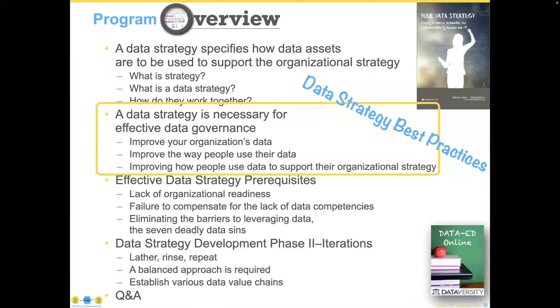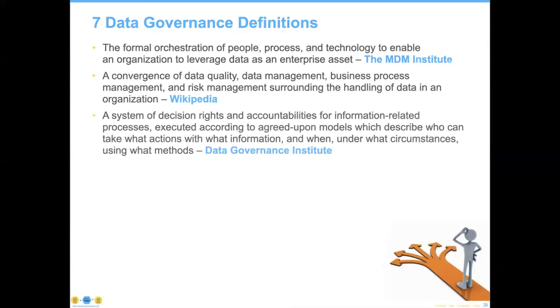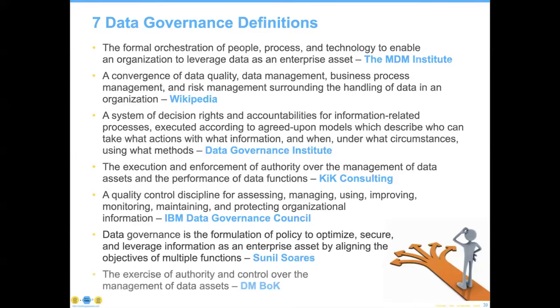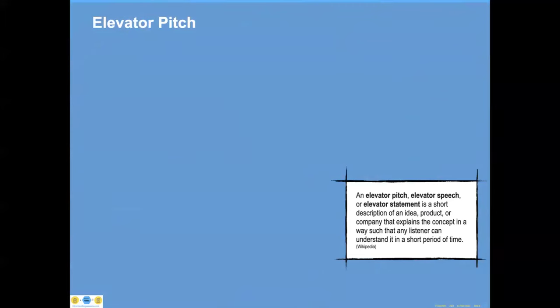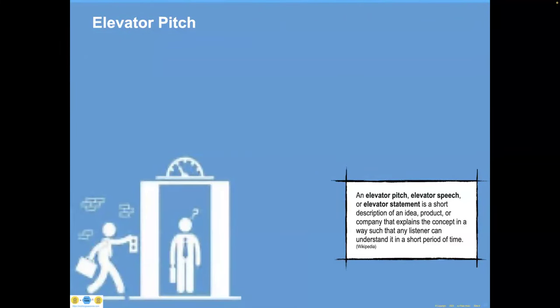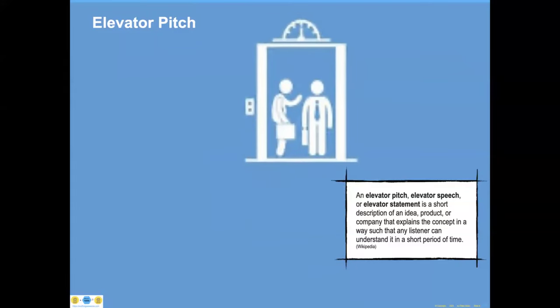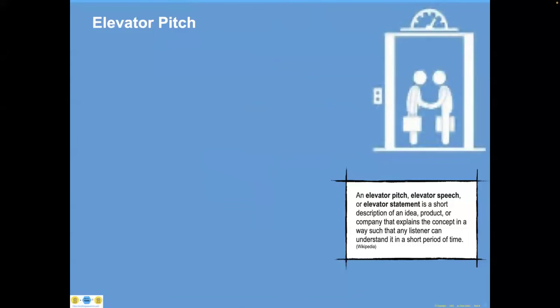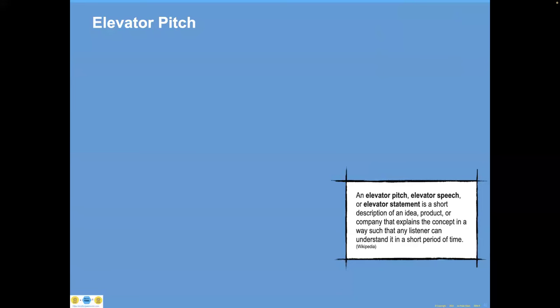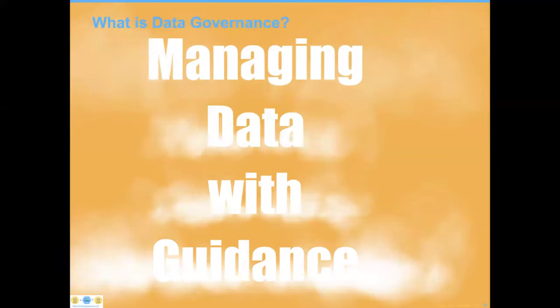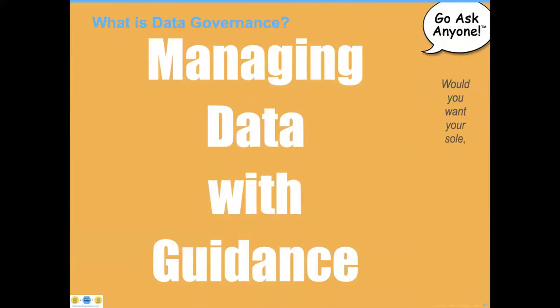Next we need to dive into understanding how data governance and strategy are so closely related. Here are just seven definitions of data governance, including one from my own organization, the DMBOK. All of these are fine definitions, but imagine having an elevator speech and the boss says: 'Hey Peter, talk to me about data governance — I've just heard about this and I understand it's important strategy.' Talking to them about any of those definitions, as good as they are, is not going to produce the boss saying 'tell me more, it sounds intriguing.' Instead, it's much better to start simply and describe data governance as managing data with guidance.